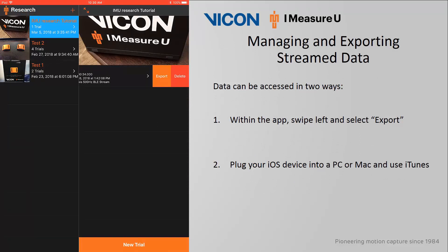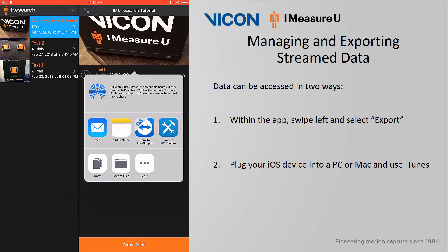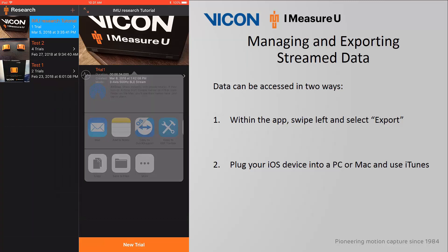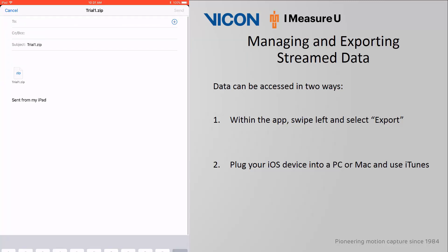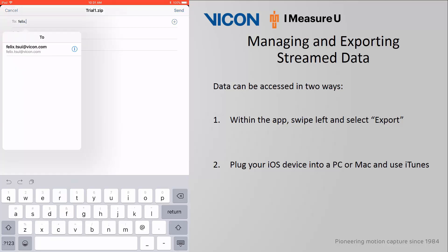To manage the trial, swipe left on the trial name. You will have two options: either to export or delete the trial. If you choose to export, you will be presented with a menu of options. The easiest and most straightforward export option would be to send yourself an email — just remember that you must have a pre-configured email on your iOS device. I will click on Mail, type in my email, and you will notice a zip version of the trial has been attached to the body of the email. I will then click Send.